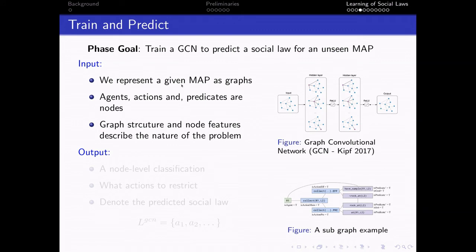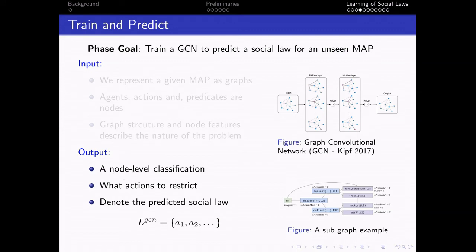We represent the given multi-agent problem as graphs. Agents, actions, predicates are nodes in the graph, and the graph structure describes the nature of the problem. The output is node-level classification on the action nodes, and it basically says what actions should I restrict, and the predicted social law is simply a set of actions.